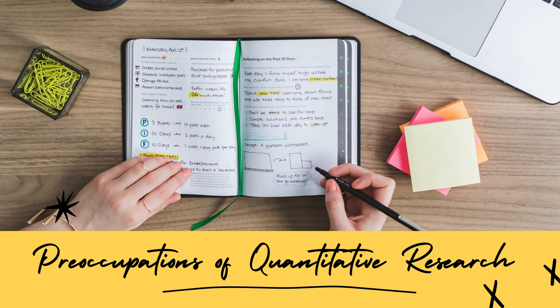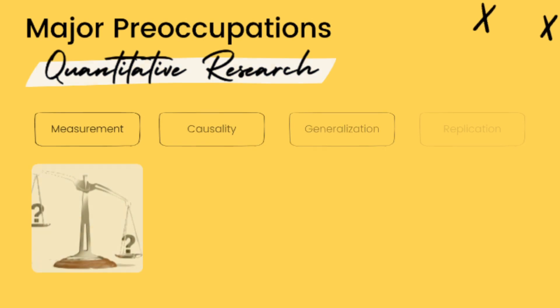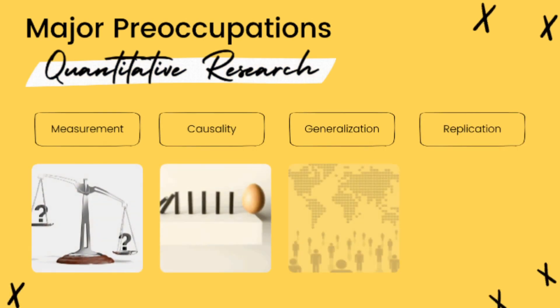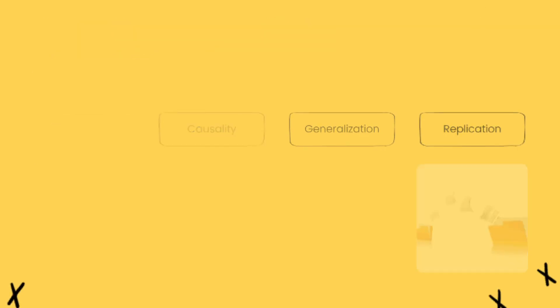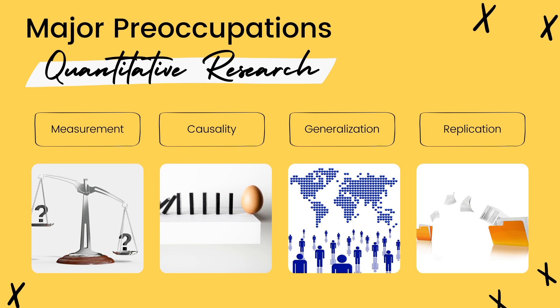Now let us go to the four major preoccupations of quantitative research, namely: measurement, causality, generalization, and replication. Let us look at these preoccupations one by one.